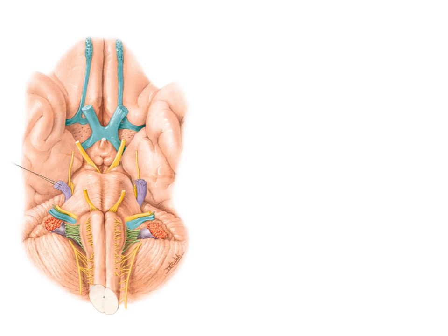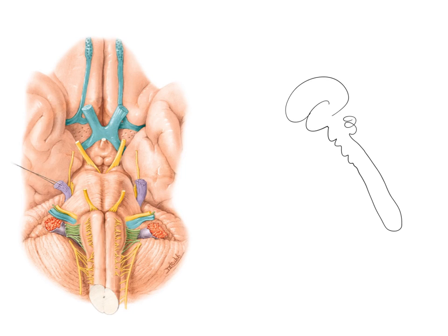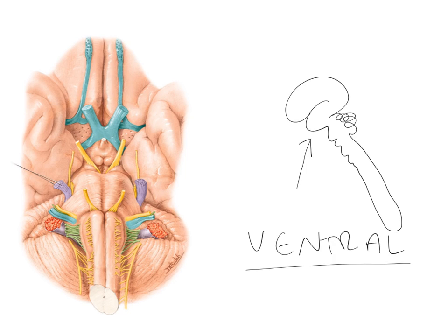The first thing we need to do is provide you with the correct orientation for the image on the left hand side of the screen. We'll do that by drawing a quick cartoon of the whole central nervous system. Here is the brain with the brain stem, spinal cord, and the cerebellum around the back. This is a view from the left hand side looking at the left hand side of the CNS. The view we have on the left is as if you were looking at the underside of the brain — it is a ventral view.